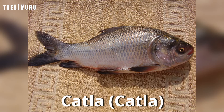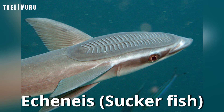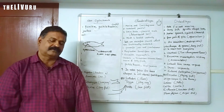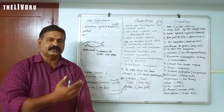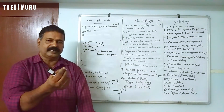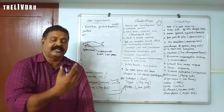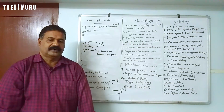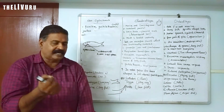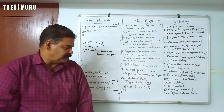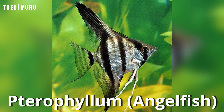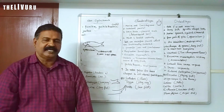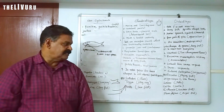Examples of Osteichthyes include freshwater and marine bony fishes. These are the examples for the three classes covered in this video.